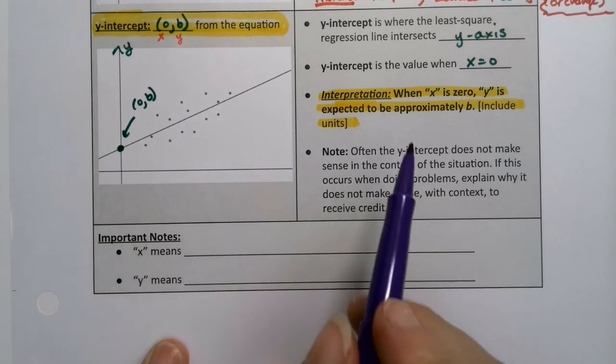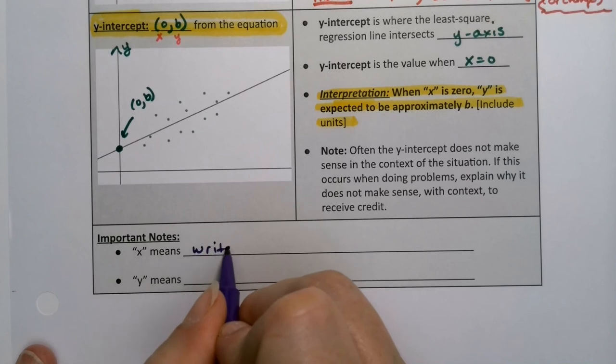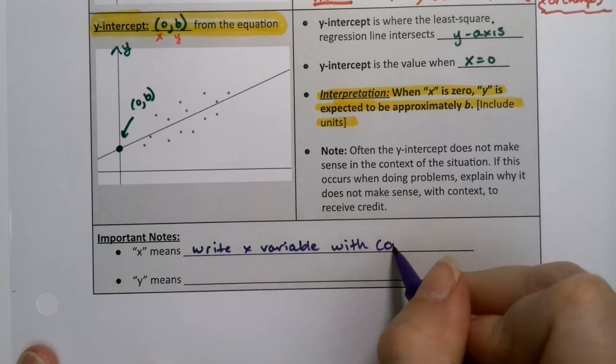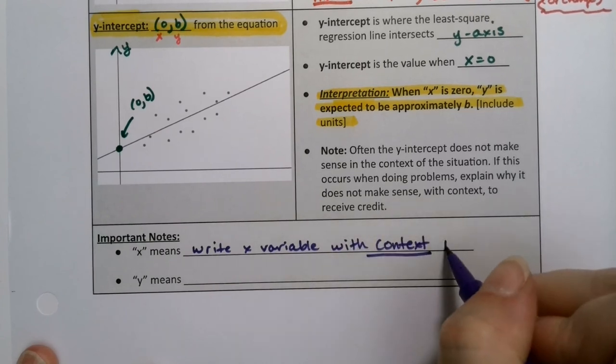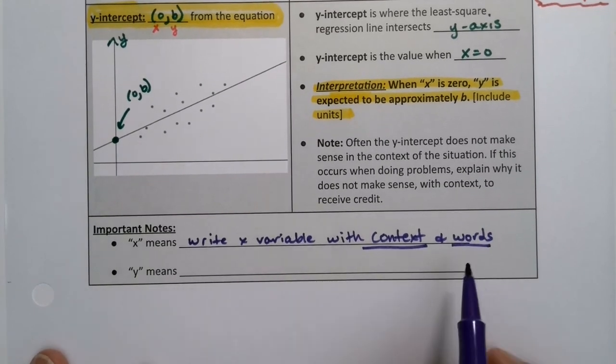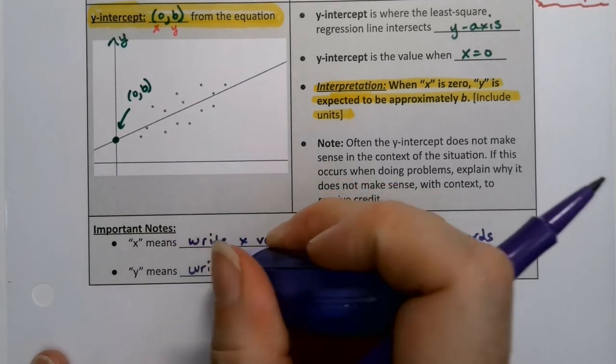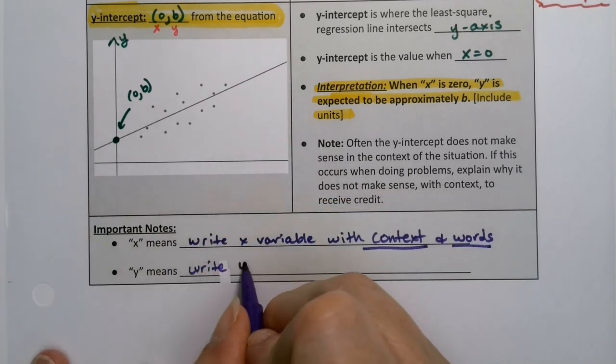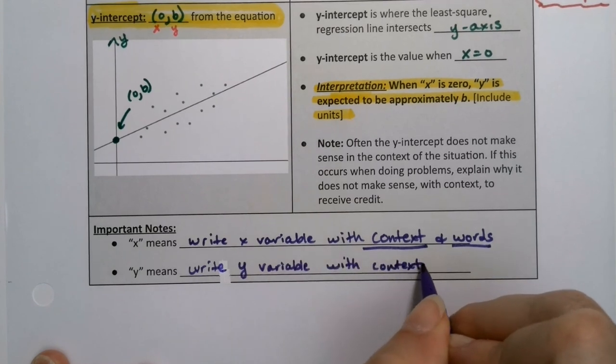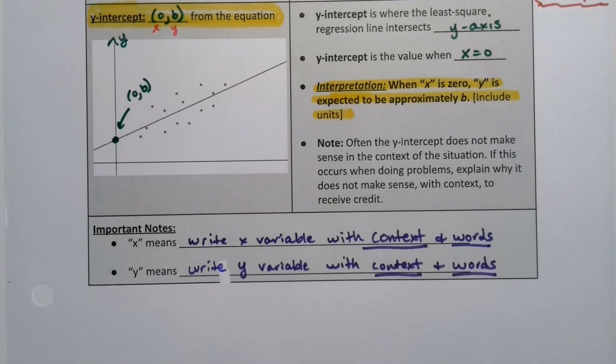And then one other little note - those quotes. In the scripts, I'm using quotes. What that means is that you have to write the x variable out with context and words. You don't write the letter x, unless you have no context. But you're gonna use the context and the words. Same thing with this - you're going to write the y variable with context and words.